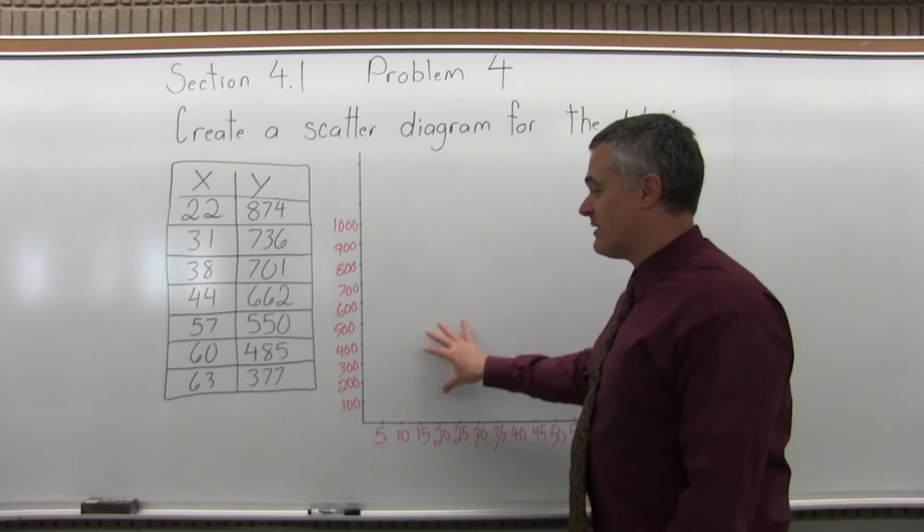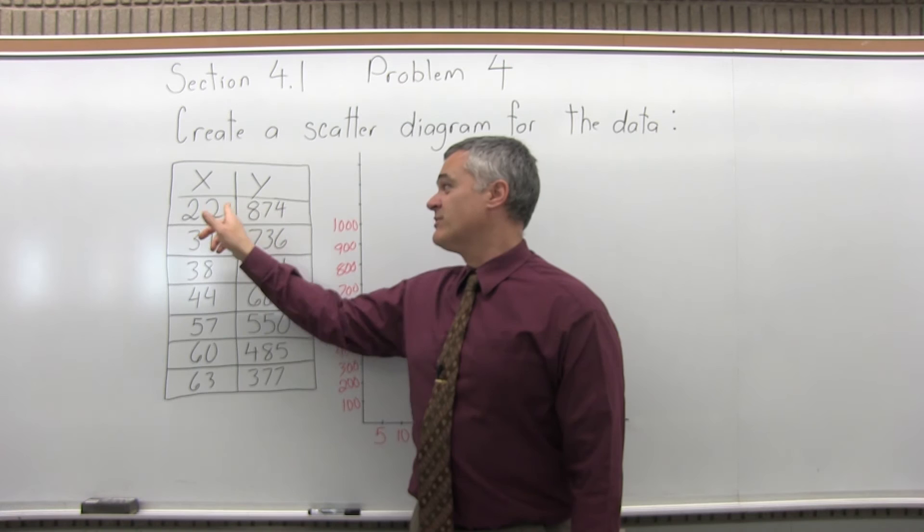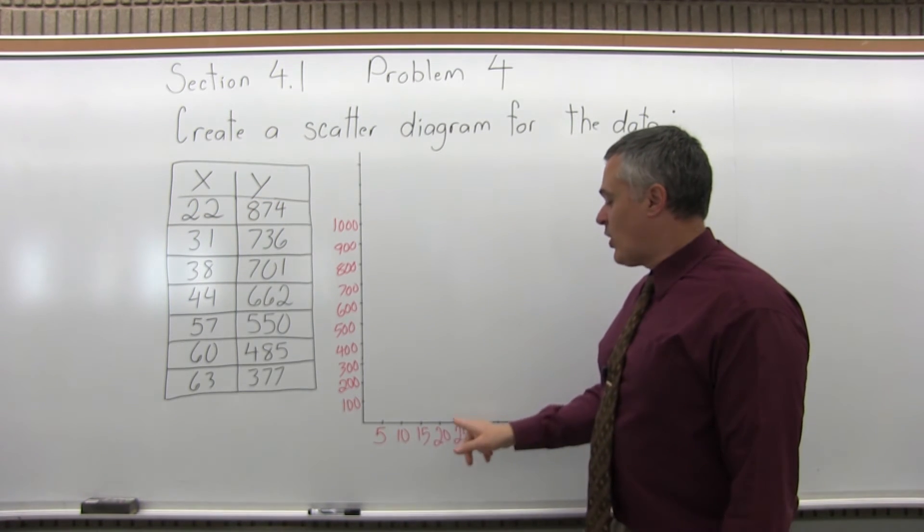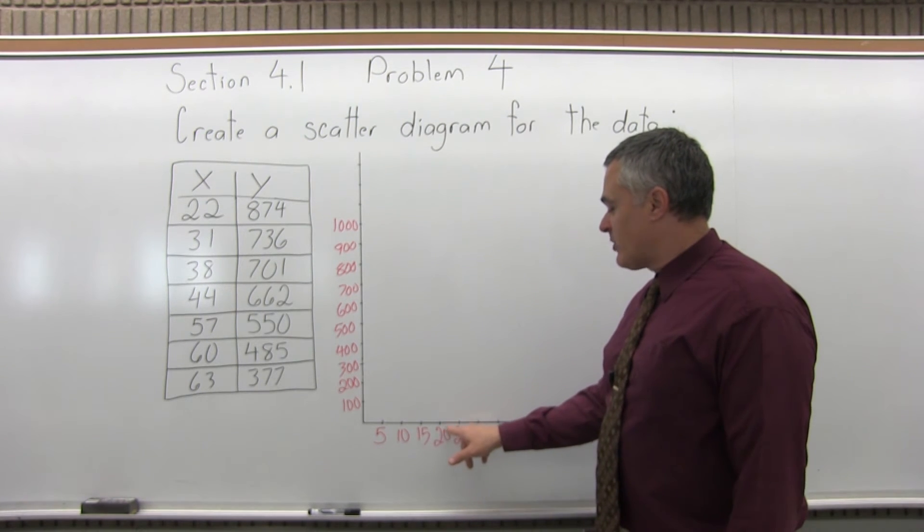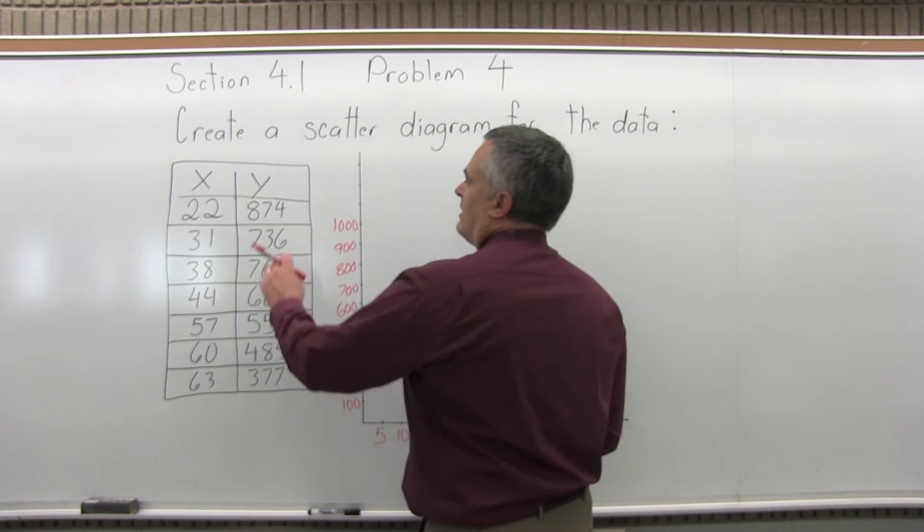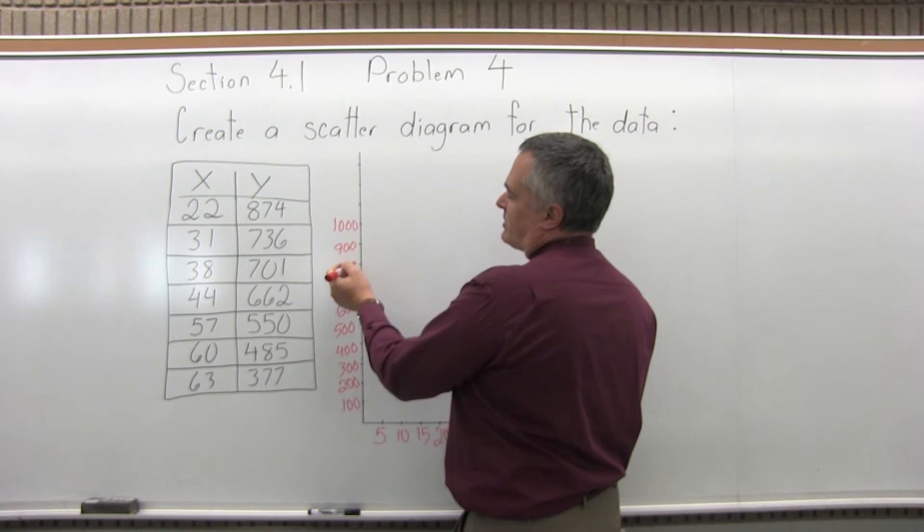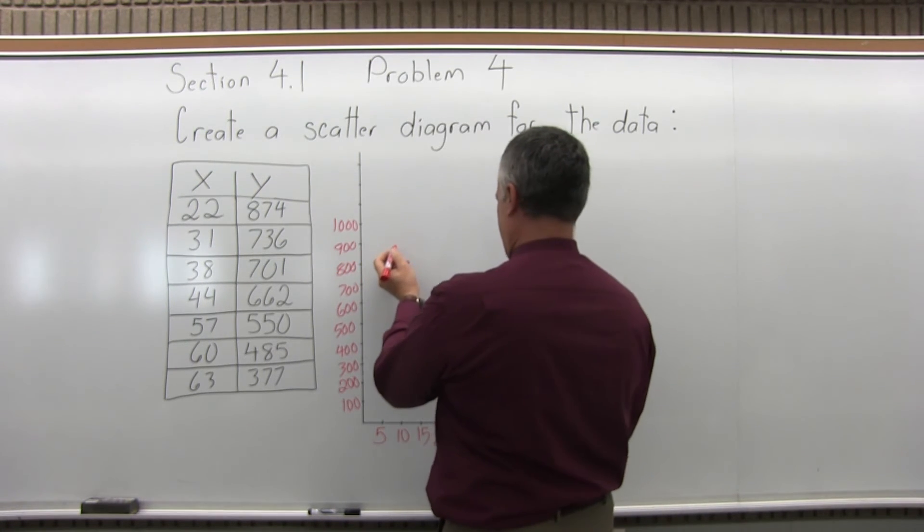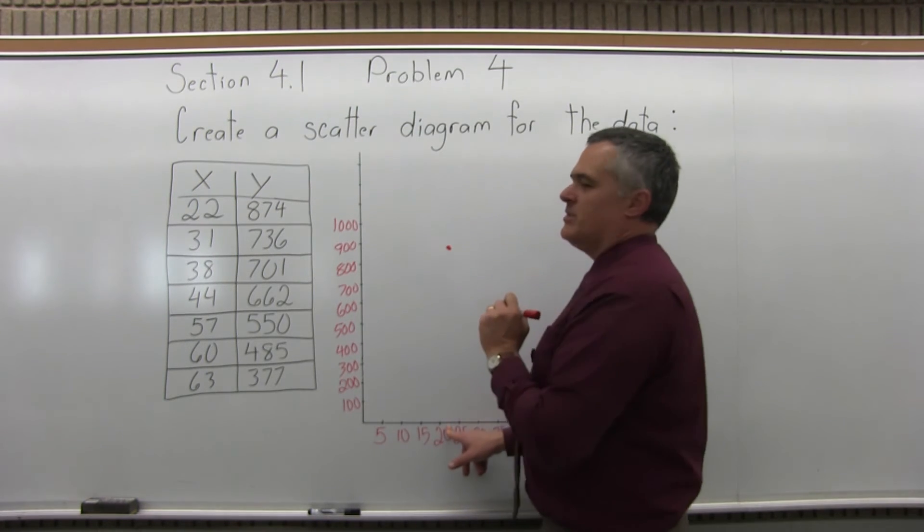So now I can start plotting the points now that I have my X axis and Y axis labeled. The first point is 22, 874. 22 for X, 874 for Y. So I want to go over 22. I don't have exactly 22 on my number scale, but right between 20 and 25, I have 22.5, so go almost halfway between 20 and 25. For the Y value, up 874. Again, I don't have 874 exactly on my number scale. Three quarters of the way between 800 and 900 is 875. So by eye, it wouldn't really look any different. So if I go over, let's see, we said it was 22, up 874. It would be something that would look about like that.